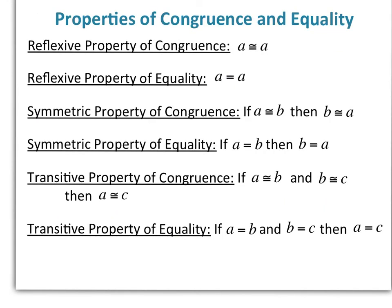The last thing for this lesson is some properties of congruence and equality. The Reflexive Property of Congruence says A is congruent to A; the Reflexive Property of Equality says A equals A. The Symmetric Property of Congruence says if A is congruent to B, then B is congruent to A; similarly for equality. Notice we can reverse the order. The Transitive Property of Congruence says if A is congruent to B and B is congruent to C, then A is congruent to C — like a substitution. The Transitive Property of Equality says if A equals B and B equals C, then A equals C.